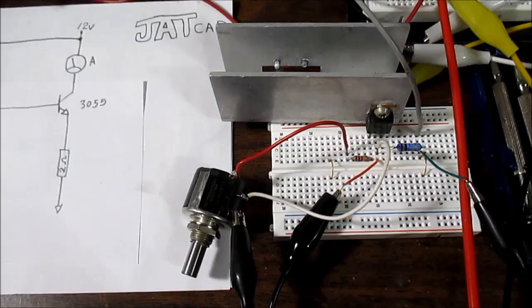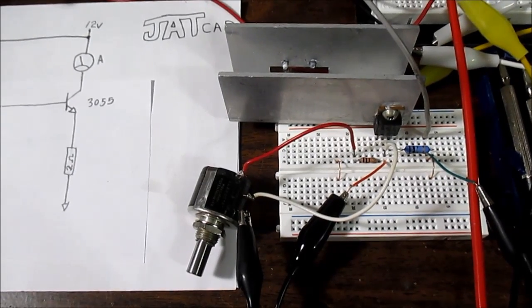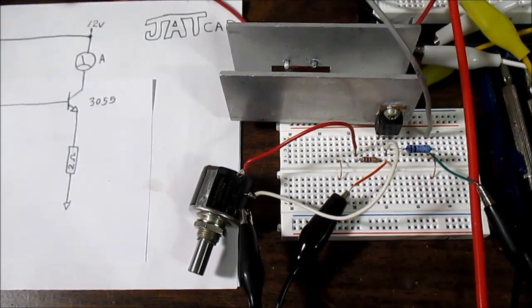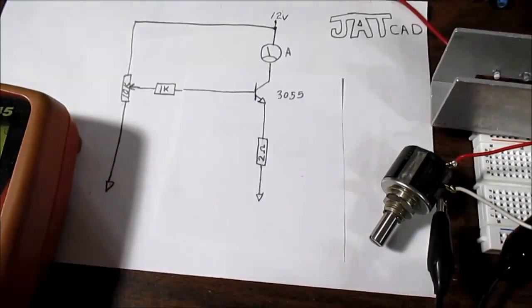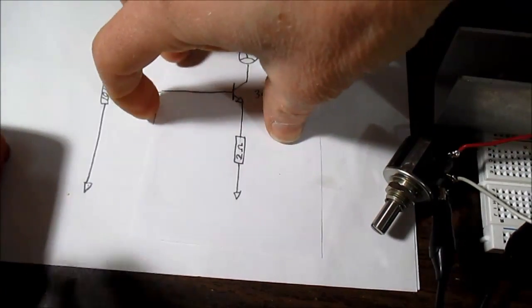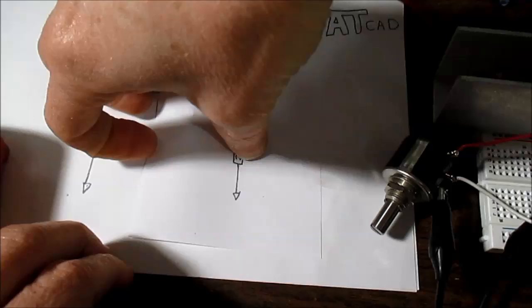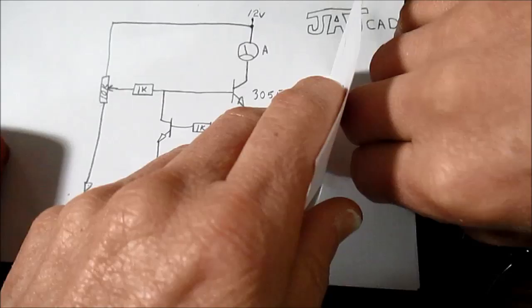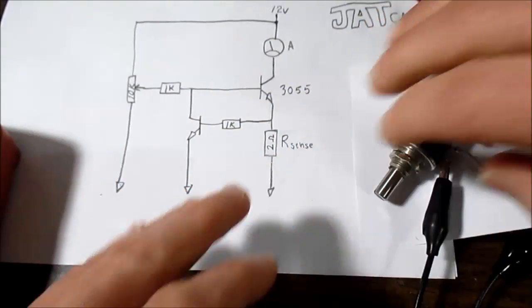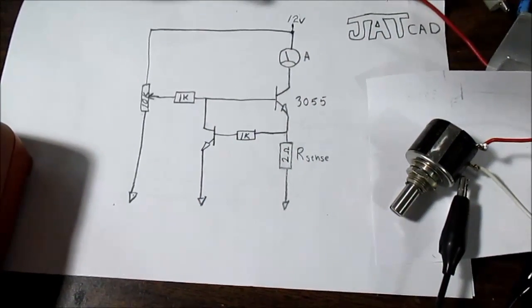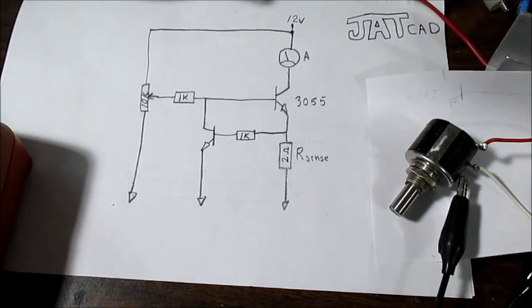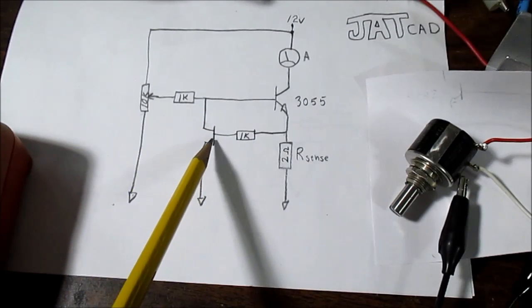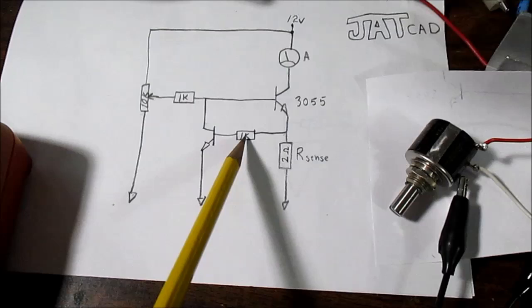Now let's say I want to limit the current to the circuit. How can I do that? Well, let me just flip this over. So all I've done here is add a transistor and another resistor.